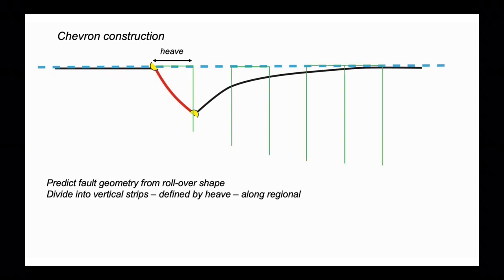Now let's identify the heave. The heave is the horizontal component of displacement, and what we do is divide the cross section up into a series of strips defined by the heave. We divide it up as vertical strips along the regional, as you can see here.